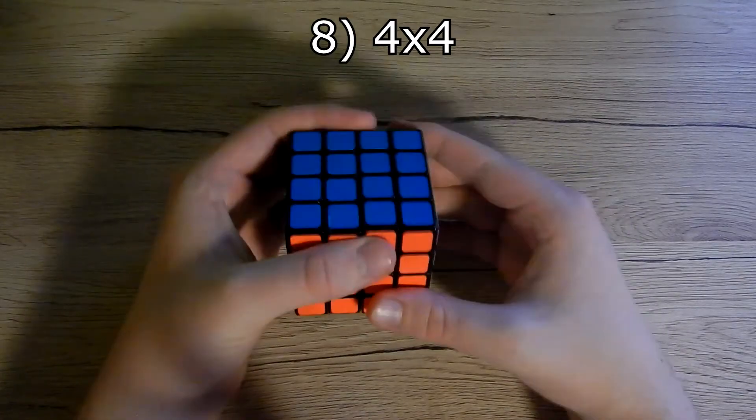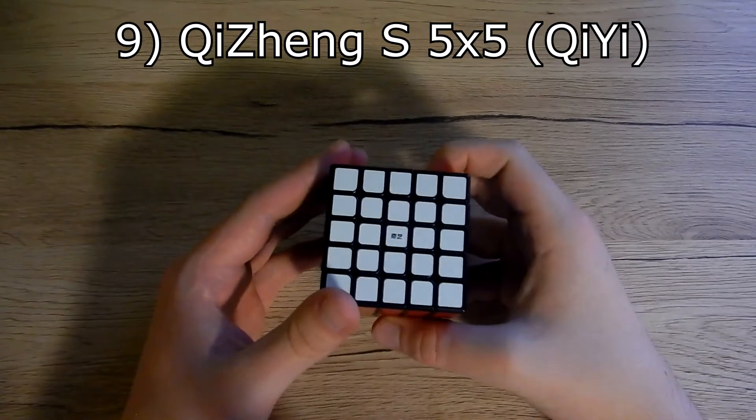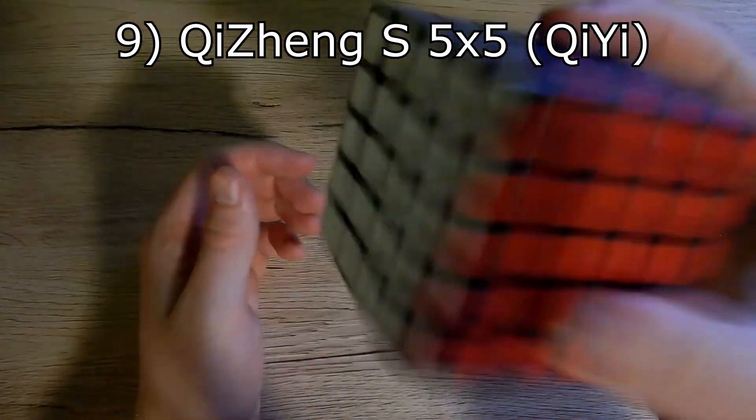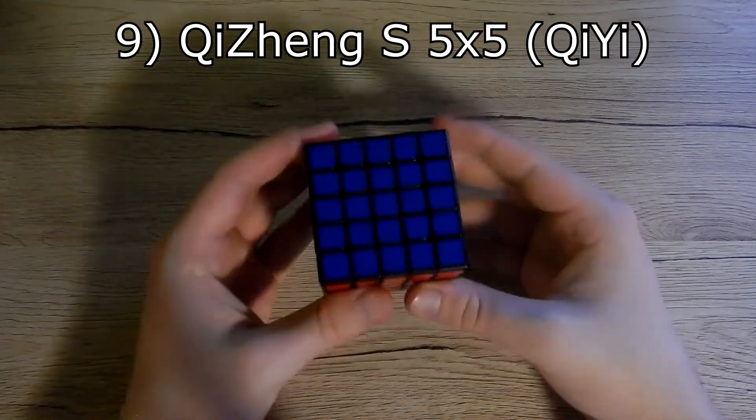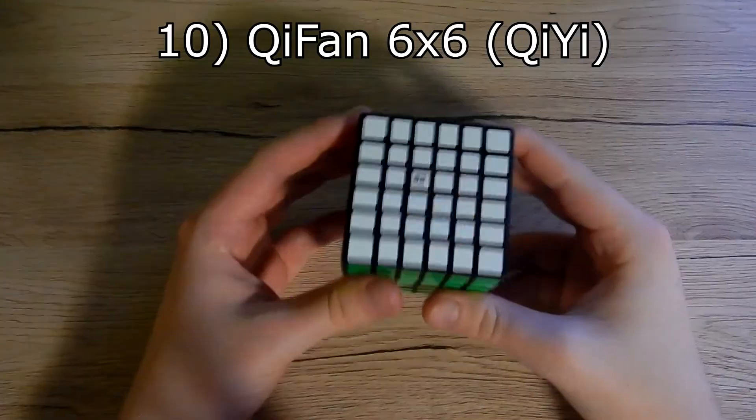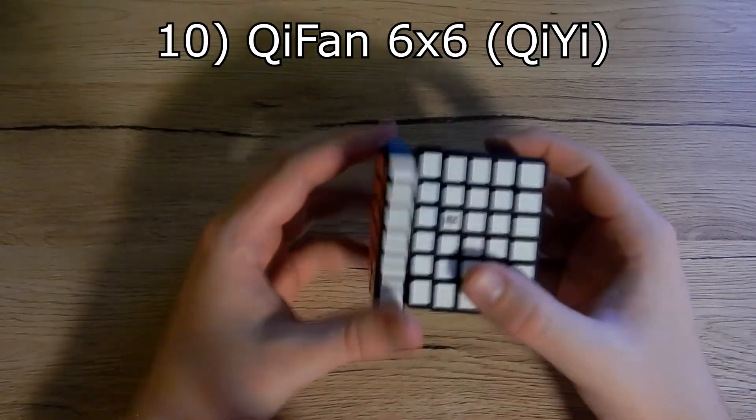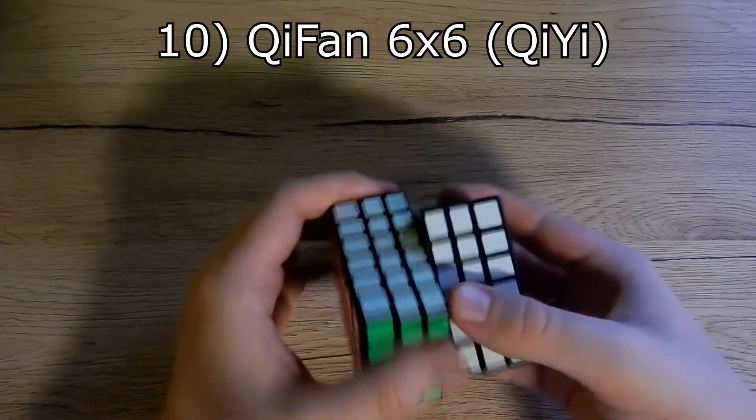Next we have 5x5 which is Shengshou 5x5. The sound inside is not that great, it scares me sometimes. Next we have Qifan 6x6.